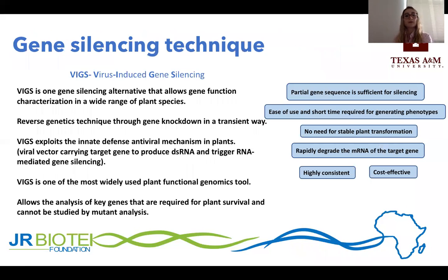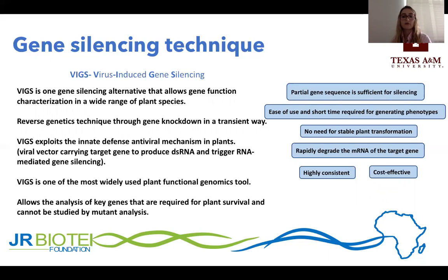Here I'm going to explain what is VIGS and the fundamentals of this technique. VIGS stands for virus-induced gene silencing and is a technique that allows the silencing of a gene for its functional characterization in a wide range of plant species. For VIGS, you only need a partial gene sequence for inducing gene silencing, but it's important that you have the whole genome already sequenced. VIGS is considered a reverse genetic technique because you already know the gene you are going to study, and you silence the gene through a knockdown, transient way, meaning it will not be transferred to the next generations.